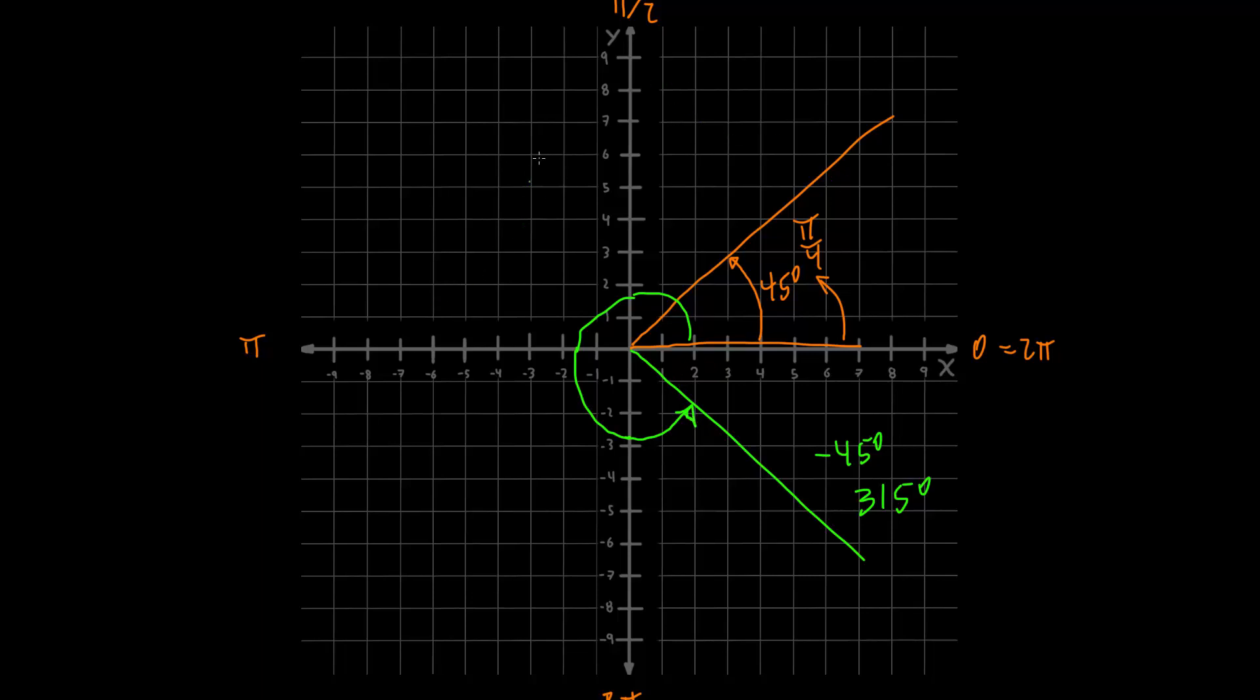And so here's the common angles. You've got pi over 2. That's the same as 90 degrees. We've got pi. That's the same as 180 degrees. This is the same as 270, and 0 is 2 pi, which is also 360, basically.